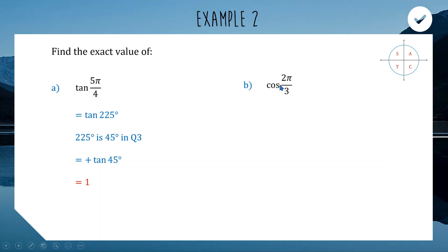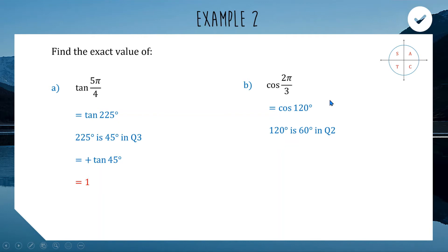Next: cos(2π/3). π/3 is 60 degrees, times 2 gives 120 degrees. 120 is in quadrant 2, 60 degrees back from 180. In quadrant 2, cosine is negative. So cos(120) = −cos(60) = −1/2.